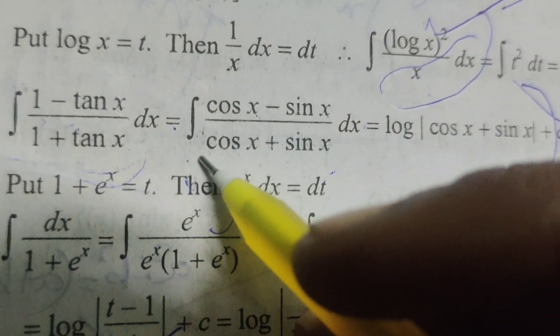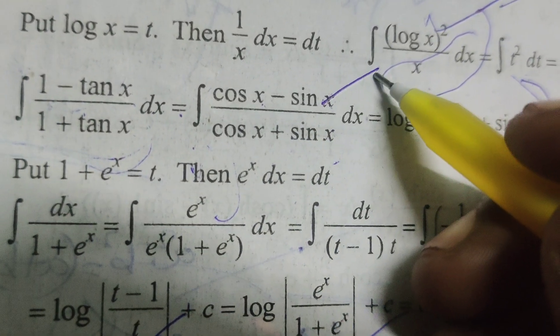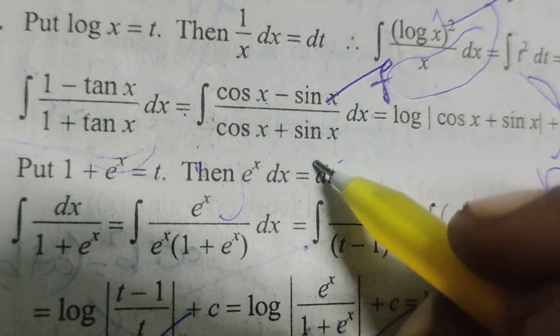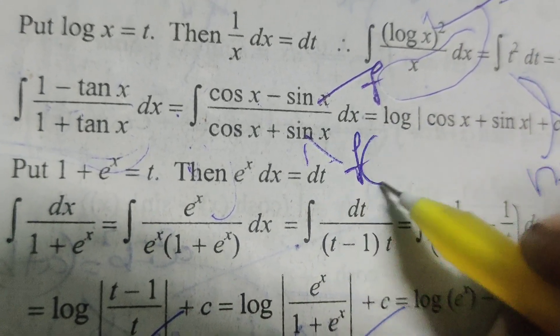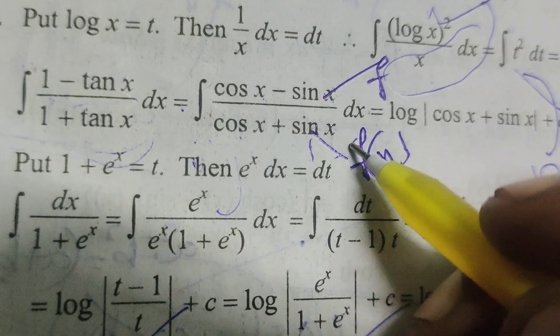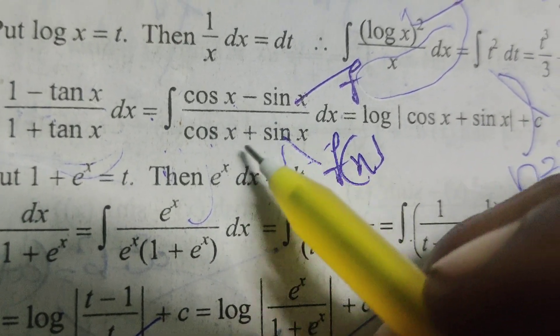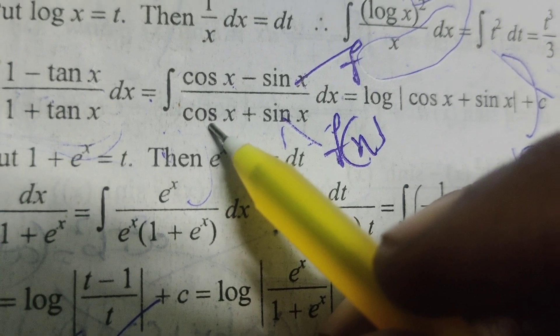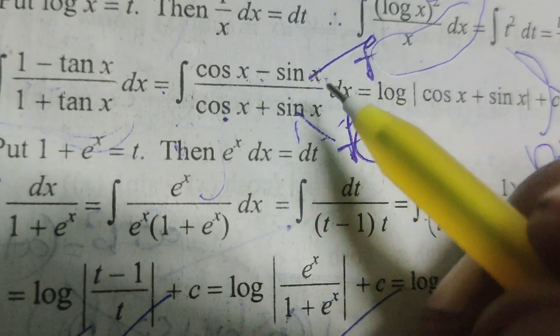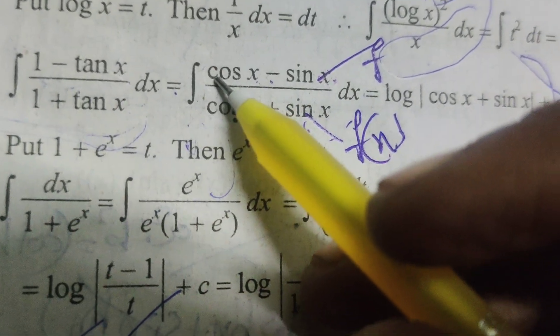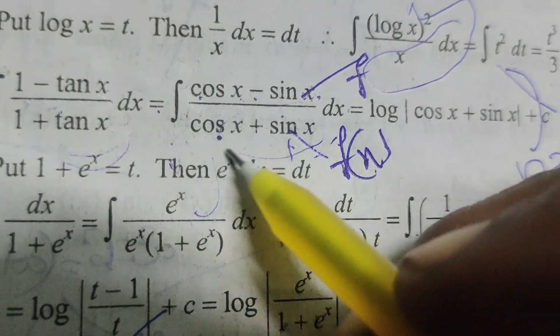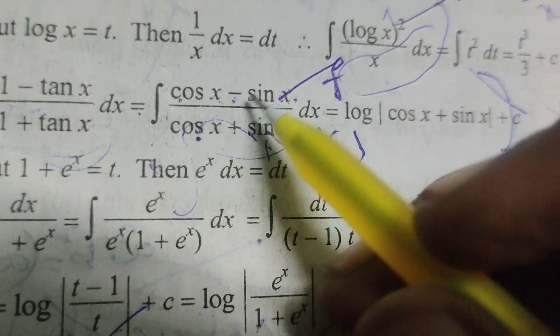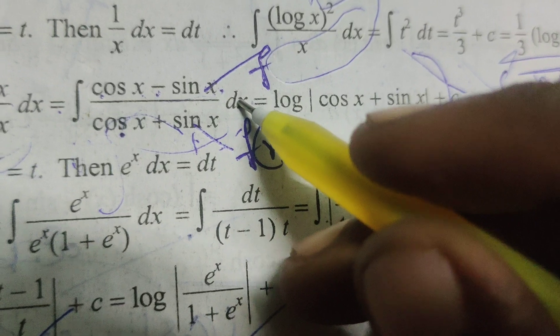Now here suppose this is f dash of x. Here this is f of x considered. Now differentiate this. Cos x differentiation minus sin x. Sin x differentiation cos x. Denominator differentiation numerator is there. So applying the formula here.